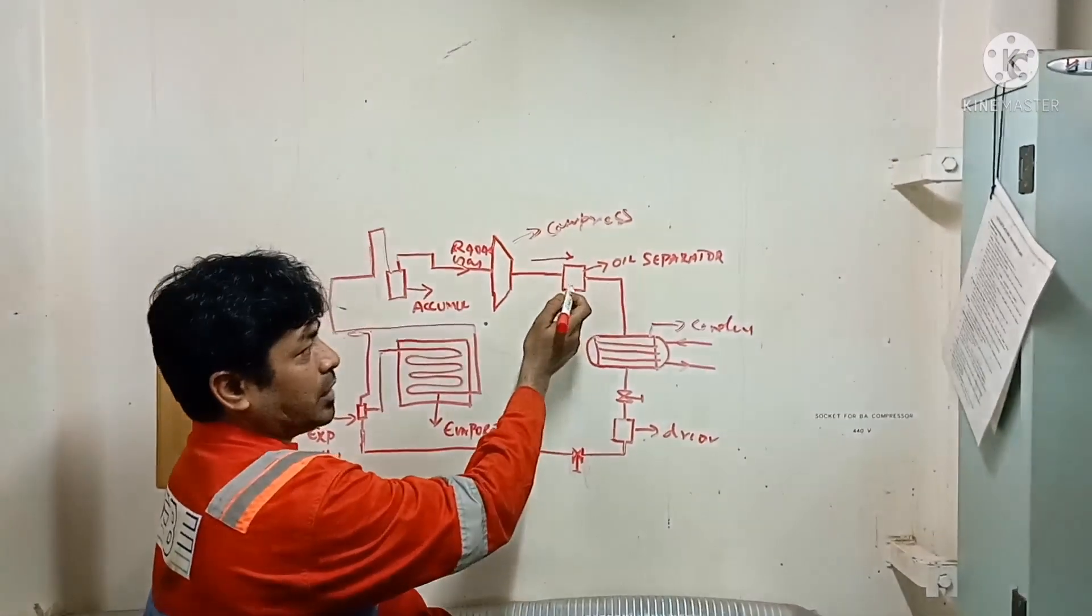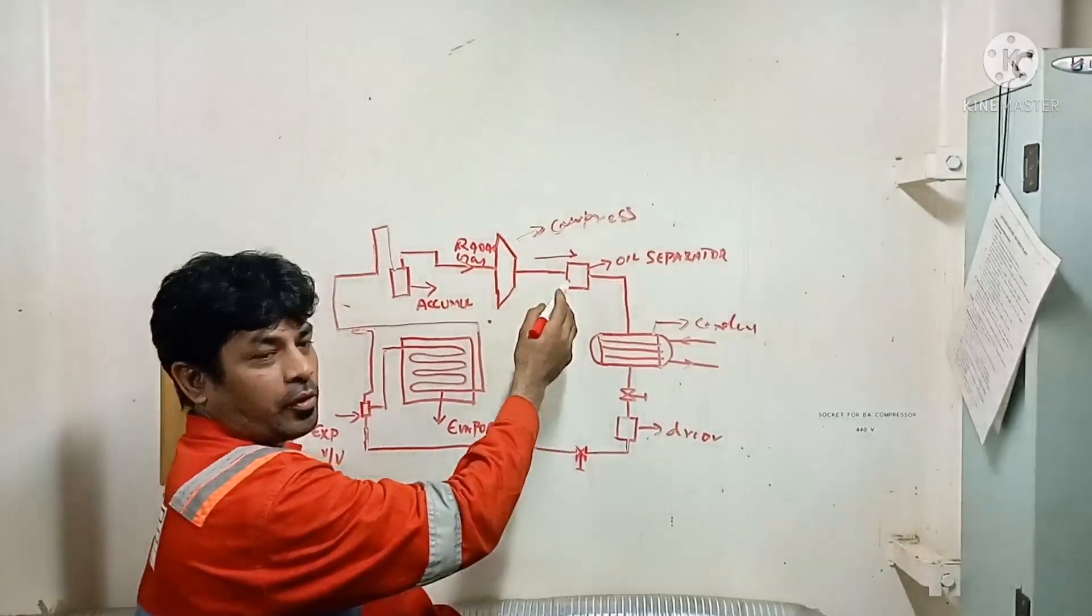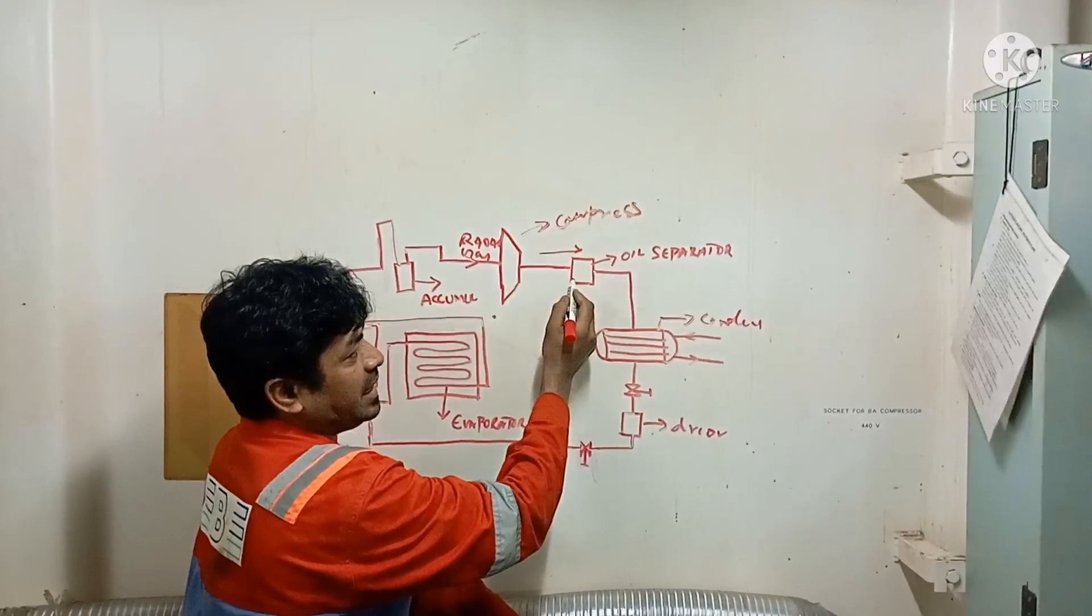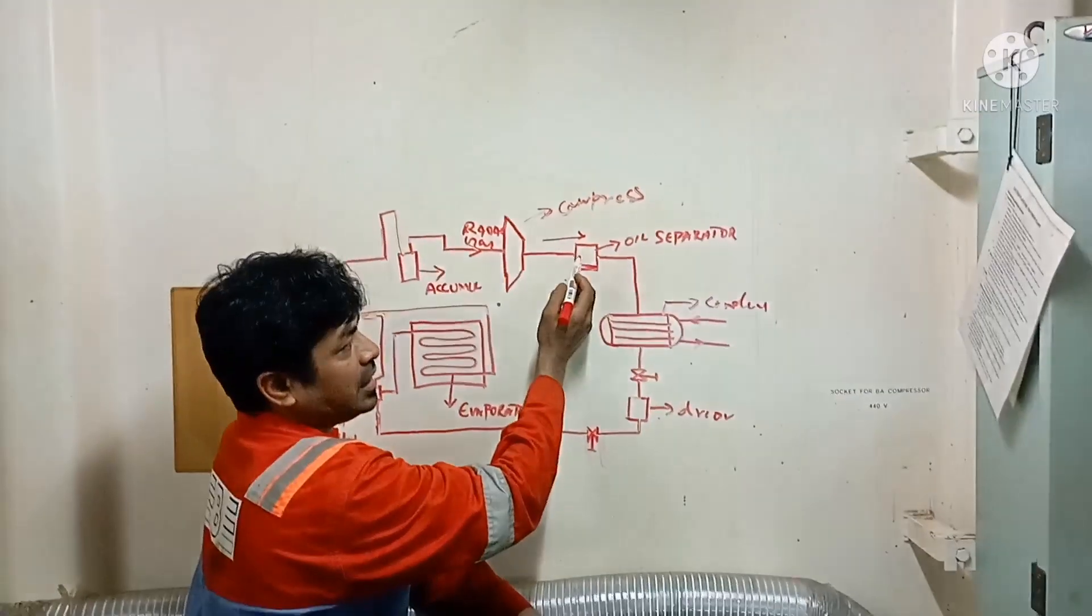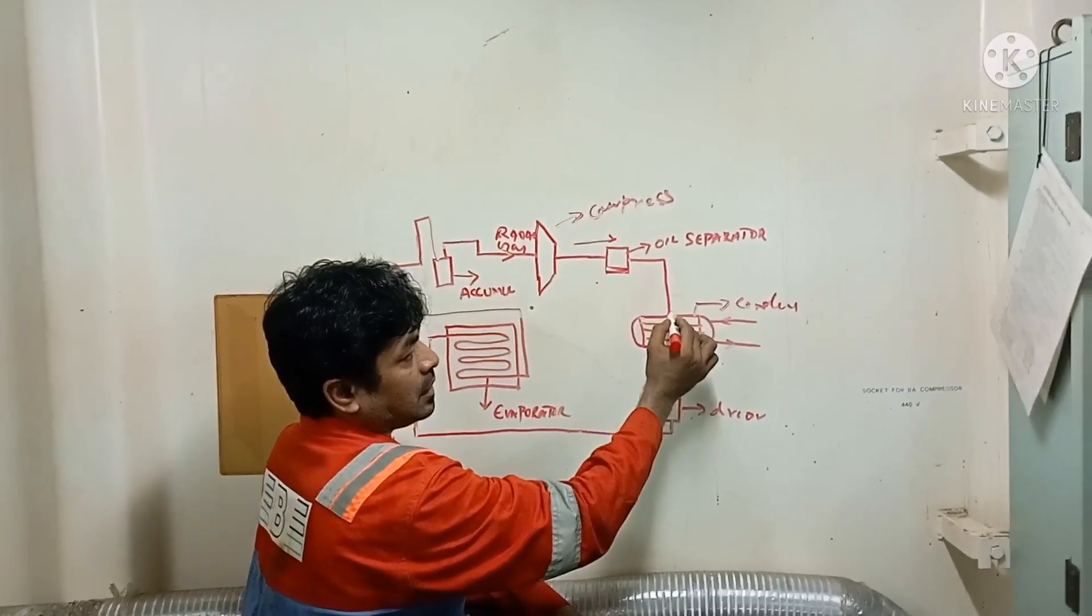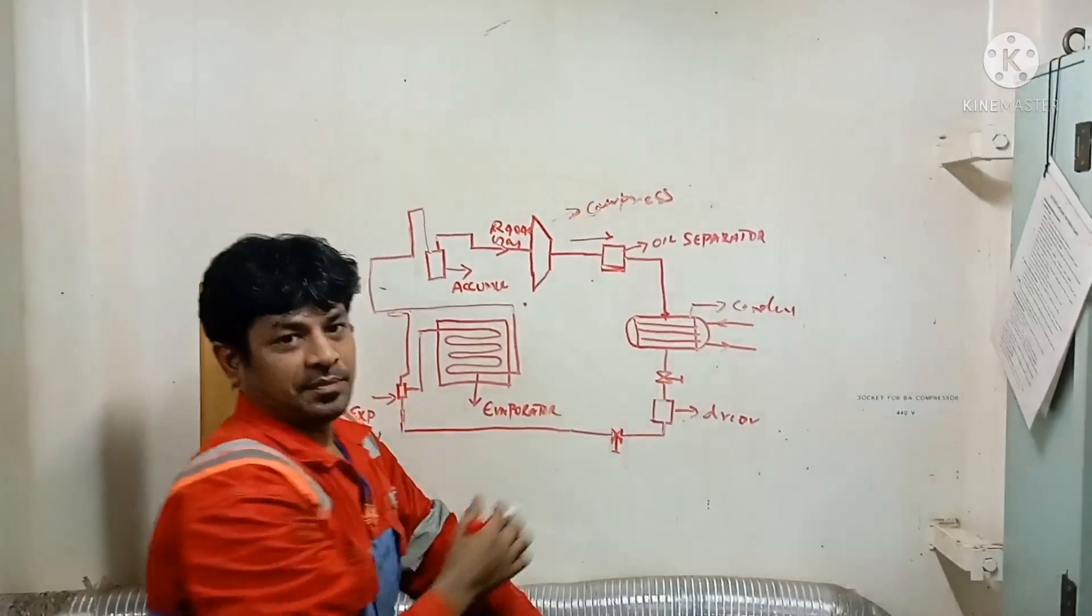The oil separator: what it does is, any mixture of oil by gravity will be inside the oil separator, and only the gas will go to the condenser.